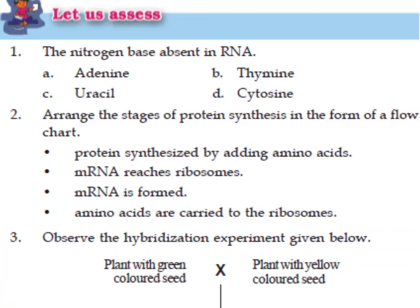First question: the nitrogen base that is absent in RNA is thymine. Instead of thymine, uracil is present in RNA.